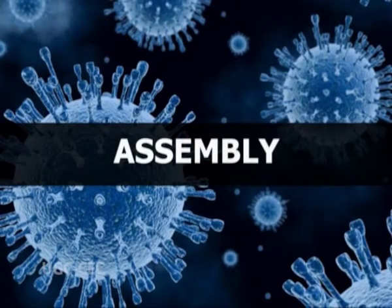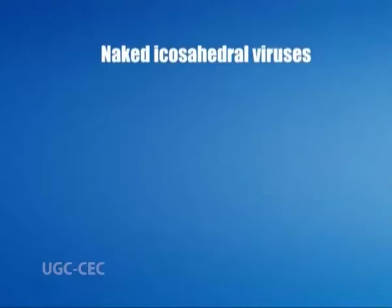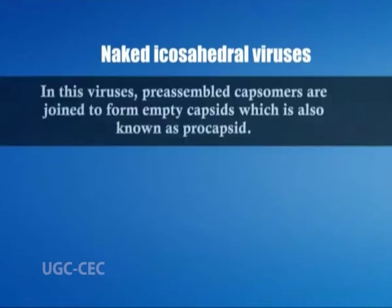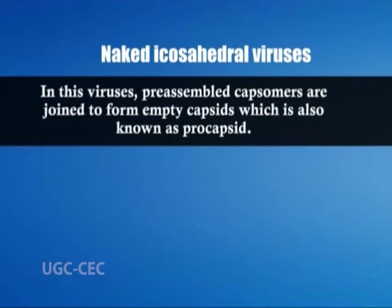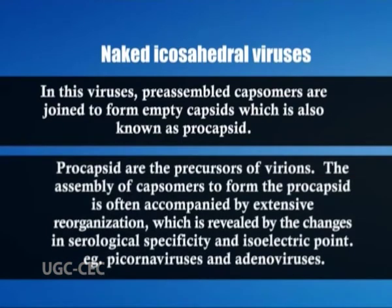Now we will come to assembly. The process of virion assembly involves bringing together the newly formed viral nucleic acid and structural proteins to form the nucleocapsid of the virus. Three strategies are employed by viruses. The first is naked icosahedral viruses: pre-assembled capsomers are joined to form empty capsids, also known as procapsids. These procapsids are precursors of the virions. Assembly of capsomers to form the procapsid is often accompanied by extensive reorganization revealed by changes in serological specificity and isoelectric point. Examples include picornaviruses and adenoviruses.